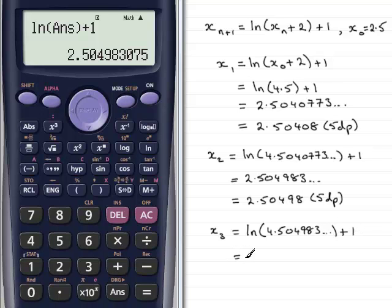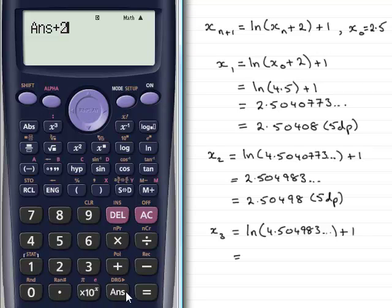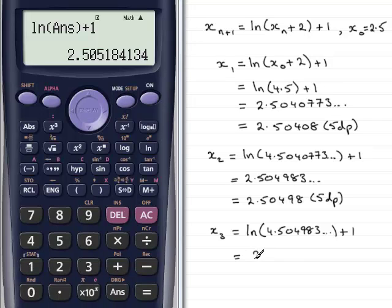So, let's work this one out. This is x_2, so I just need to add 2 to that. That gives me my answer over here. Take the natural log of it, so we've got the natural log of that answer, and then add 1. And what we have is 2.505184, and so on. So, to 5 decimal places, that's going to be 2.50518 to 5dp.